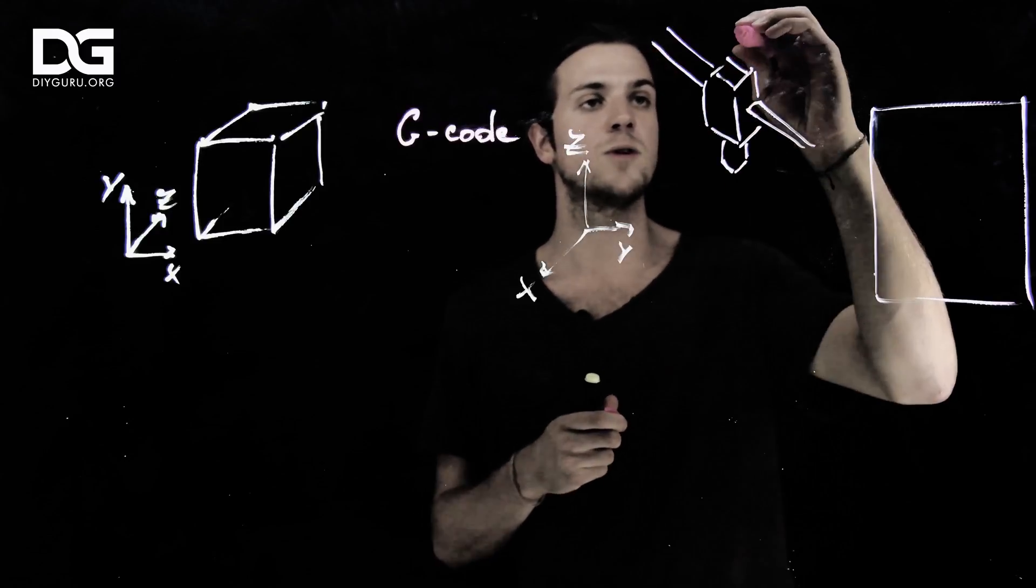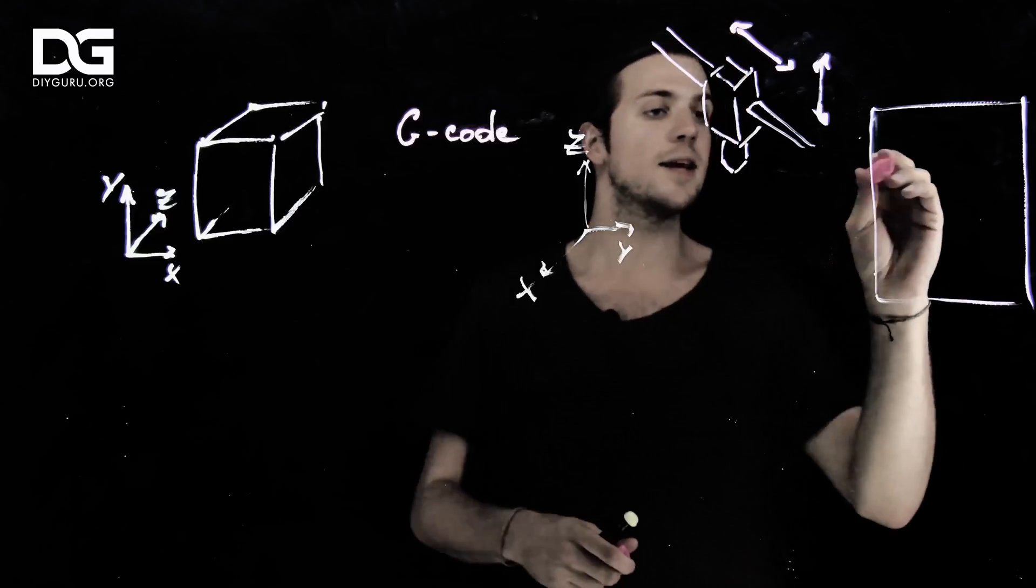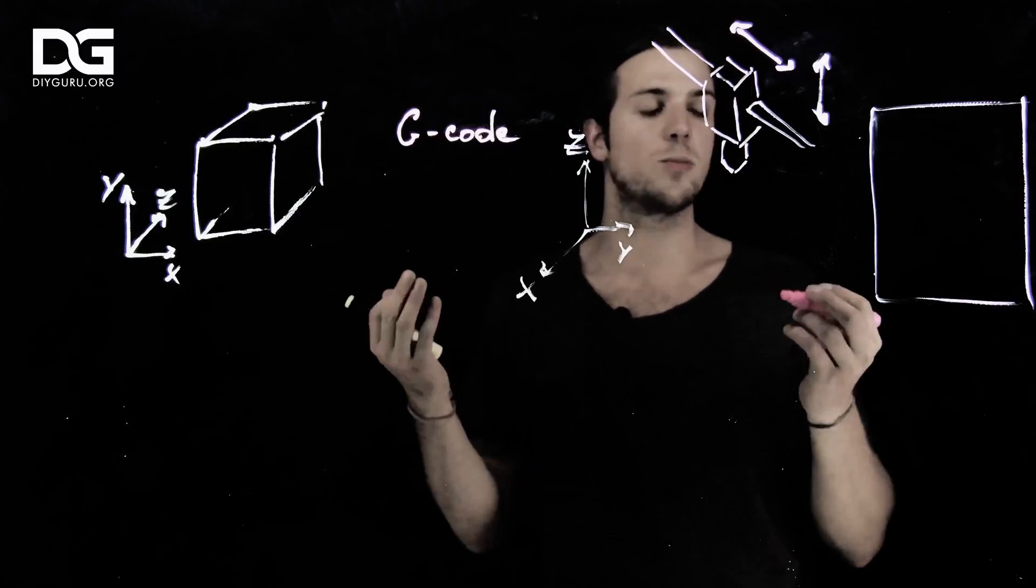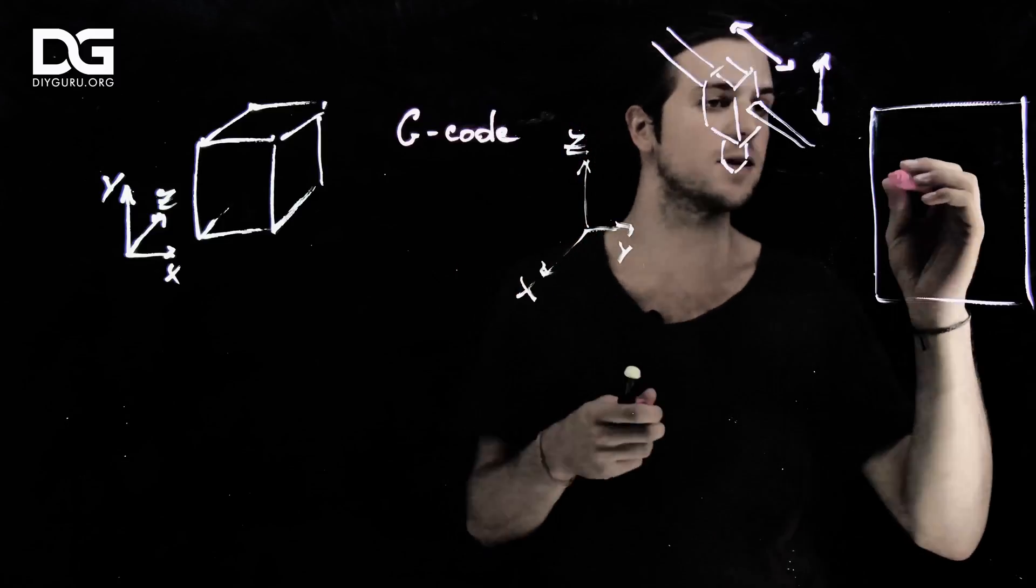And this is the one which is going to move in different directions in our 3D space. And that's my window, so my computer, my software, in which I'm going to send those instructions to the machine. Let's start.